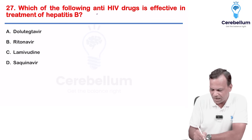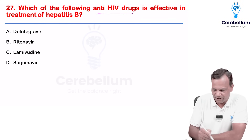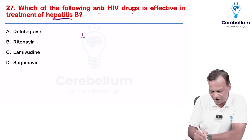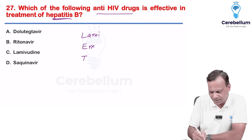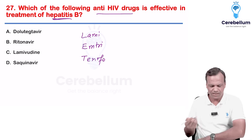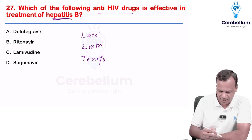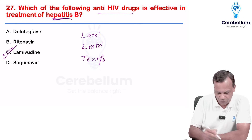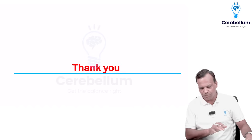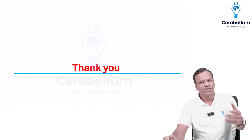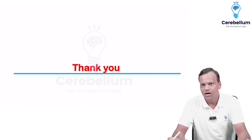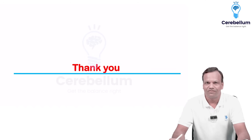Which drug has both anti-HIV and anti-hepatitis B properties? Drugs active against hepatitis B include lamivudine, emtricitabine, and tenofovir — these have dual properties. Among the options, the answer is lamivudine. These are the important questions that were asked in the FMG exam of July 2025. Thank you very much.